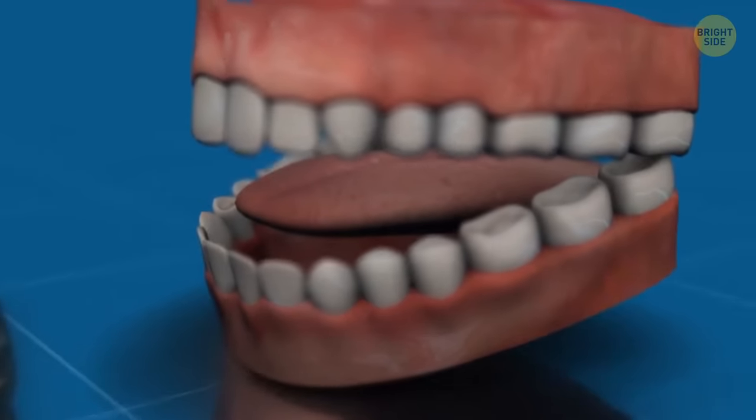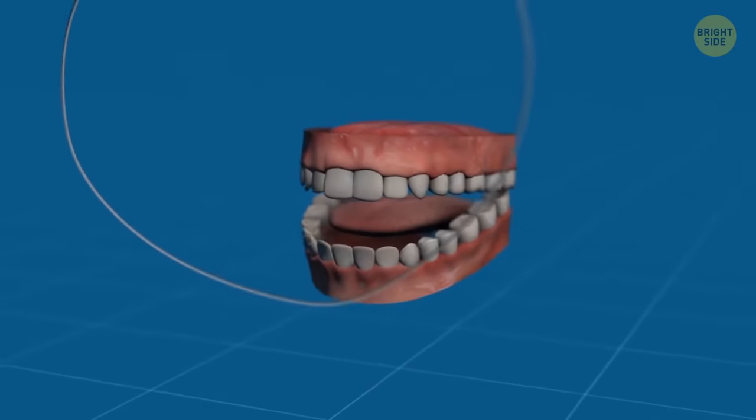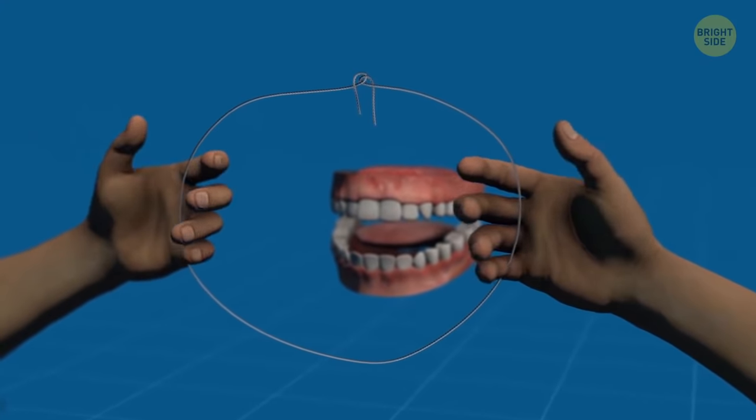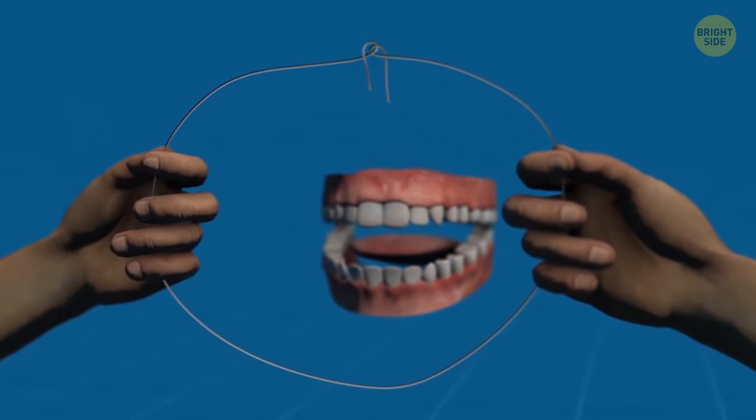If something got stuck in your teeth, it could be hard to have perfect results with loose floss. To increase the tension, tie it in a knot. With increased tension, you'll get rid of that basil between your teeth in no time.